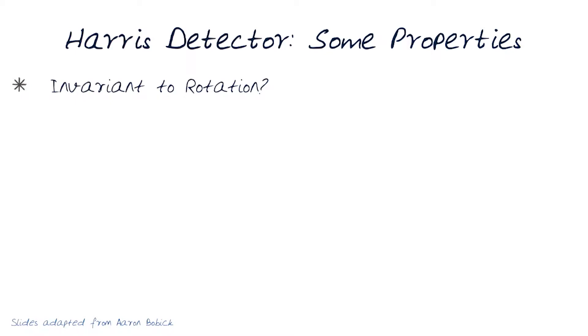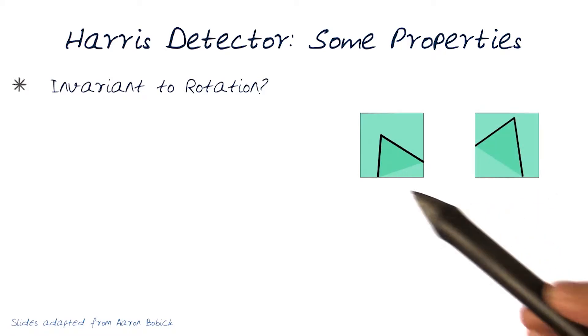Let's first look at invariant to rotation. Here's a simple example again. Let's look at this. And now the same corner in this instance is appearing in another image with rotation.